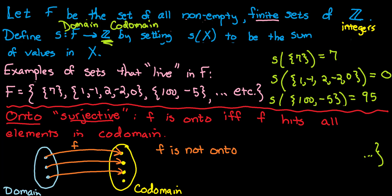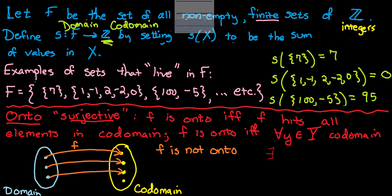More formally, you'll see the definition: f is onto if and only if for all y in capital Y, which is the codomain, there exists some elements in the domain such that f of x equals y. In other words, all points in the codomain have some pre-image that maps to it. You can use that formal definition and you need to if you're going to write a proof.